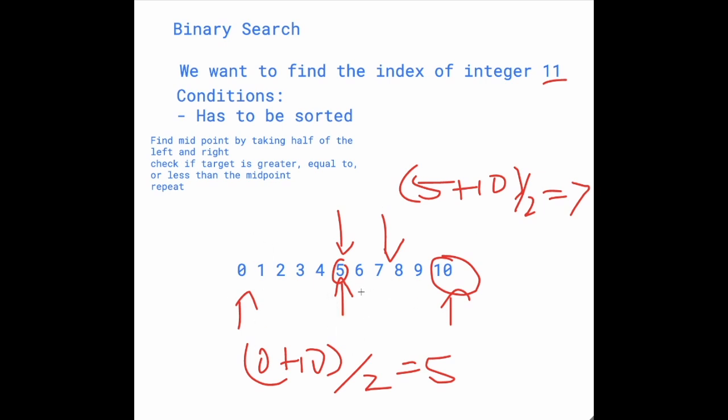And so also, we have to make sure what we do when it's greater than or less than. So in this case, we said it was greater than 5. Then we set the leftmost index to 5. So we're basically setting the left index to mid, the midpoint.